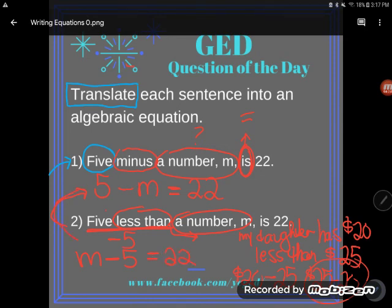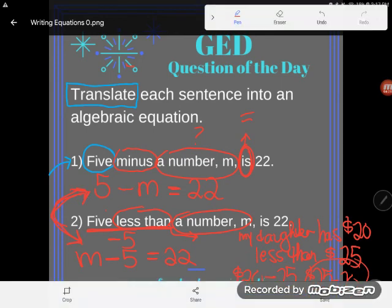And be careful even though these problems look really similar. Five minus m is equal to 22 and m minus 5 is equal to 22. They are not the same. Order matters in subtraction. I can't say that enough. Order matters in subtraction. Five minus m is not the same as m minus 5.